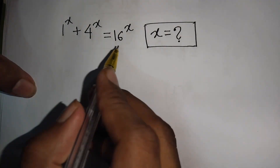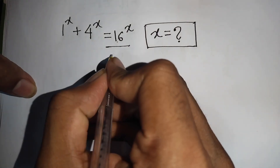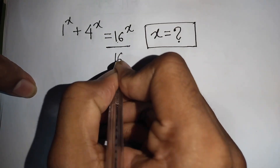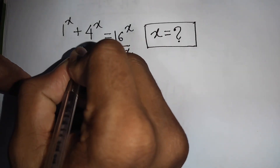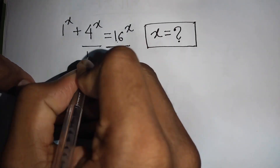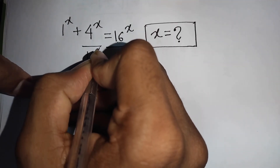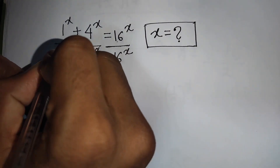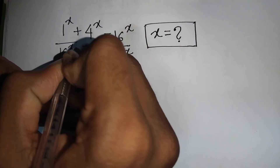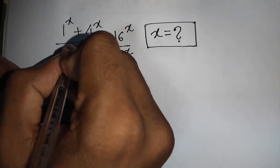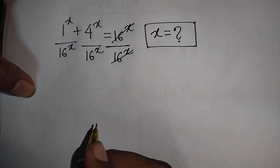First, we divide both sides by 16 to the power x. Dividing by 16^x on both sides, the right-hand side will be cancelled, leaving us with a simplified left side.